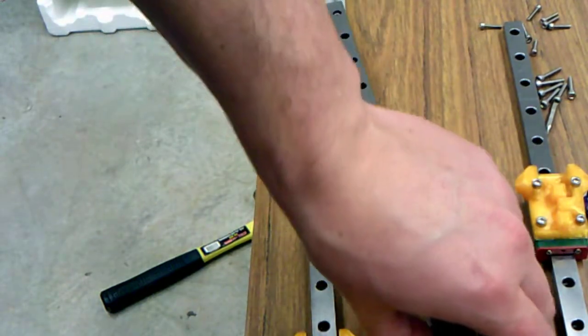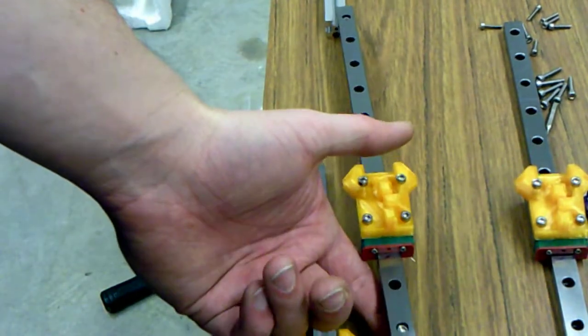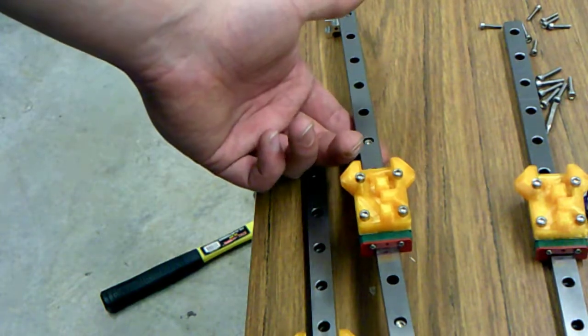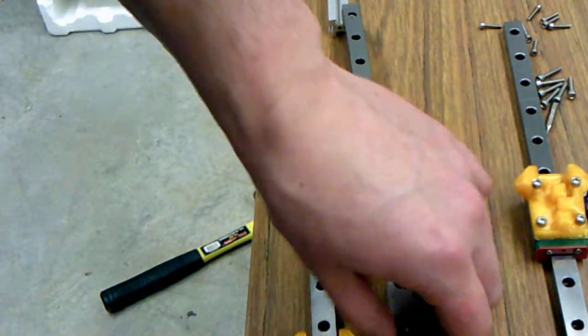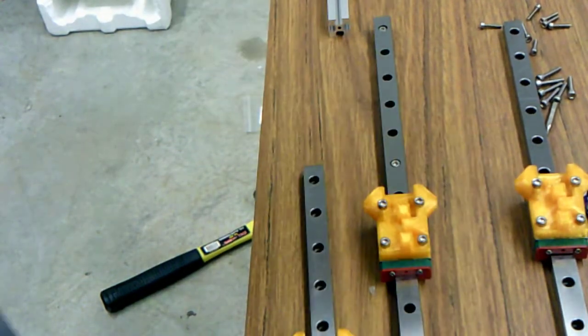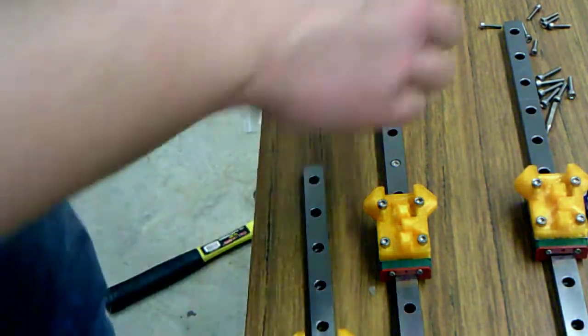And what I've done is I've actually only placed four nuts into my linear rail. It's not really going to need a whole bunch, it's a very rigid piece.